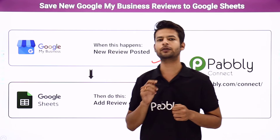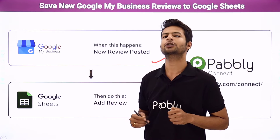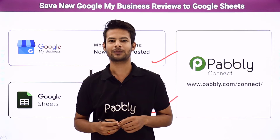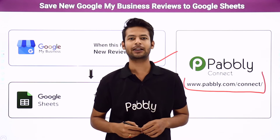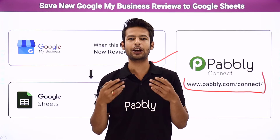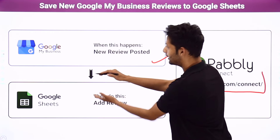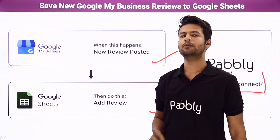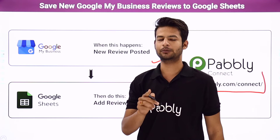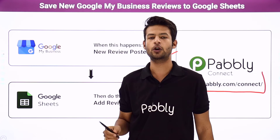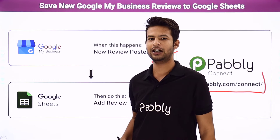Here I face one problem: there is no direct link or integration between these two applications. So how have I performed the automation? With the help of PablyConnect. PablyConnect is an integration and automation software. It will help us link both applications together so that every time a new review is posted about your boutique, automatically the details of that customer and the comment will be captured in the spreadsheet in your Google Sheet account.